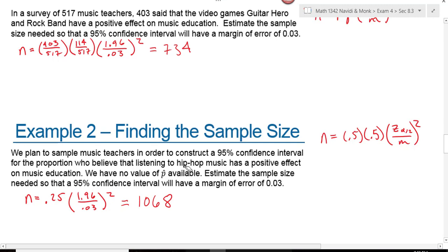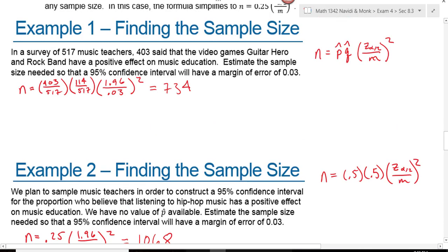Notice the difference. I have to survey more than 300 more people or 300 more teachers in order to get the margin of error that I want if I don't know something about the population proportion. If I don't have these numbers, if I know nothing in advance,